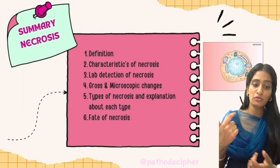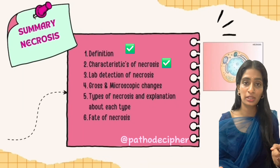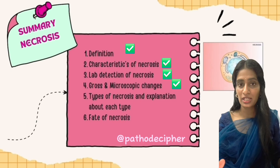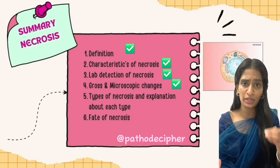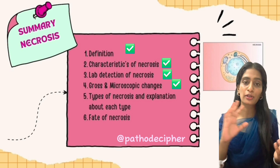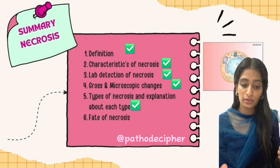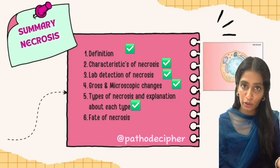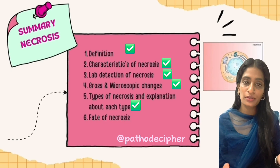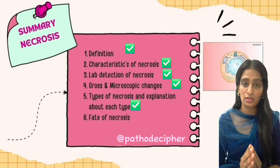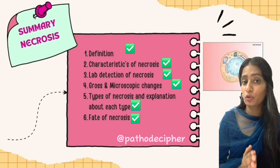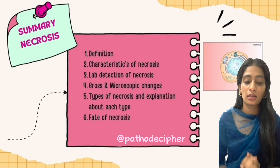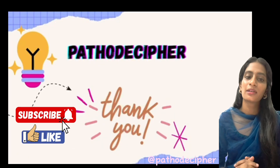In summary, when answering a question about necrosis in your exam, write: definition, characteristics, lab detection with two examples, gross and morphology including cytoplasmic and nuclear changes with diagrams, electron microscopy, and the types — coagulative, liquefactive, caseous, fat, fibrinoid, gummatous, and gangrenous necrosis — and finally the fate of necrosis. This covers everything needed for a high-scoring answer.